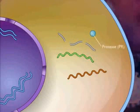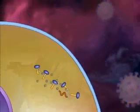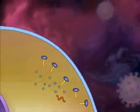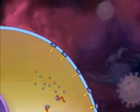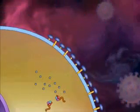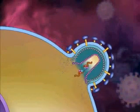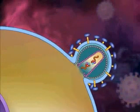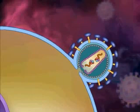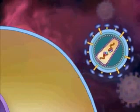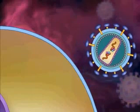Protease inhibitors interfere with this step. GP41 and GP120 are inserted into the host cell membrane, and the structural proteins surround the viral RNA to form the core. Finally, the virion is released by budding.